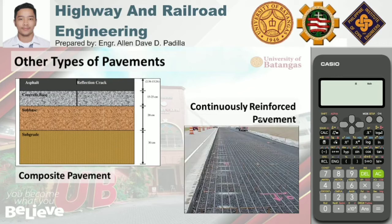Then we have the continuously reinforced pavement. From the term itself — reinforced — meaning it has steel reinforcement. Continuously reinforced concrete does not require any contraction joints, unlike unreinforced rigid pavements. Transverse cracks are allowed to form but are held tightly together with continuous reinforcing steel.